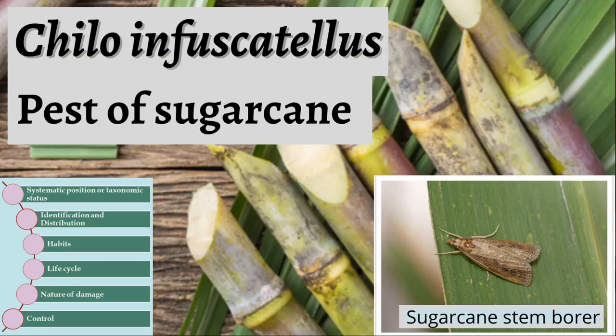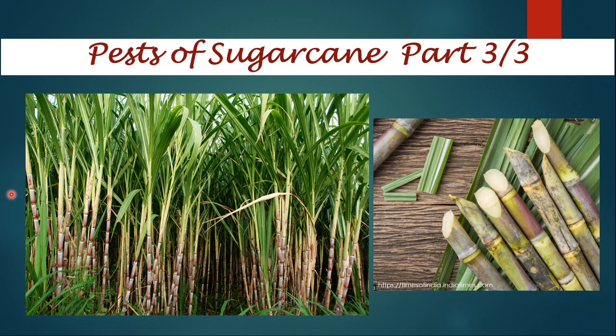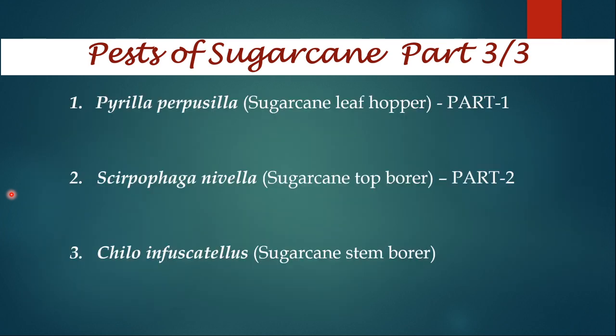Hello and welcome to my class. In this video, I am going to discuss the biology of Chilo infuscatellus, commonly known as sugarcane stem borer. It is a major pest of sugarcane. This lecture is the third part of the series on pests of sugarcane. I discussed the biology of Pyrilla perpusilla in the first part and Scirpophaga nivella in the second part.